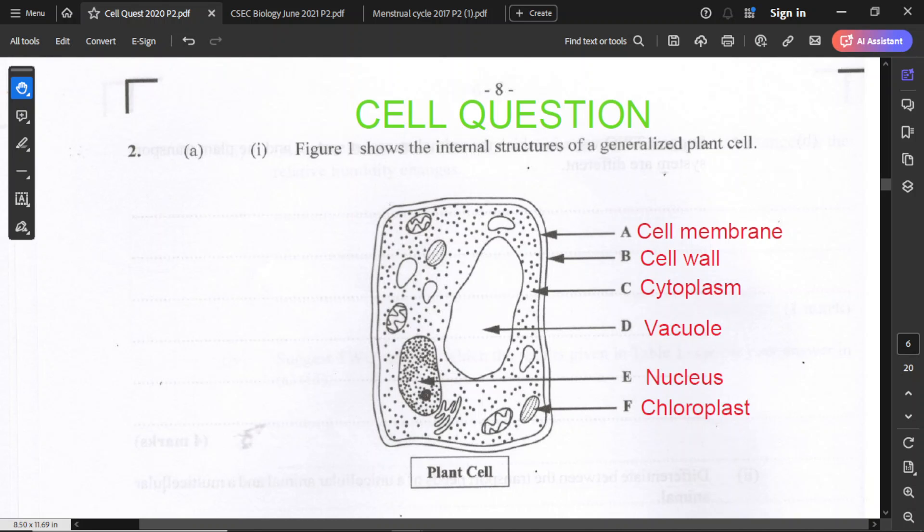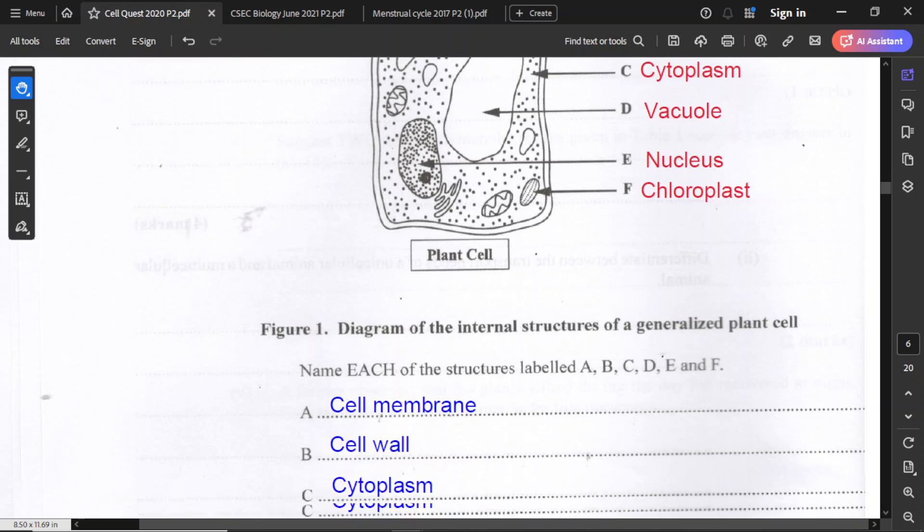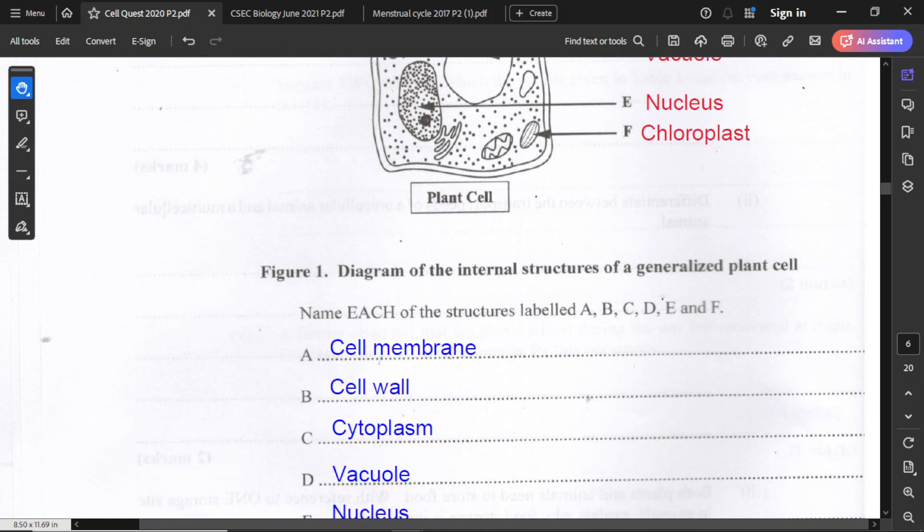The statement is that figure one shows the internal structures of a generalized plant cell, and the first part of the question asks us to name each of the structures labeled A, B, C, D, E, and F.